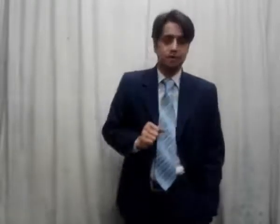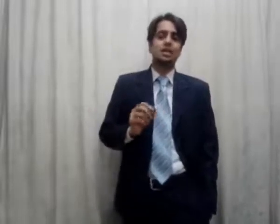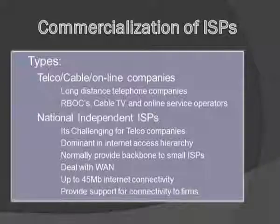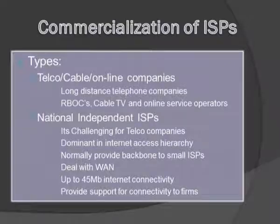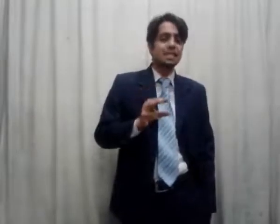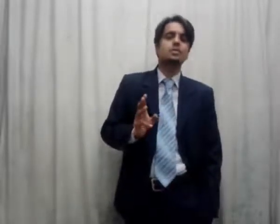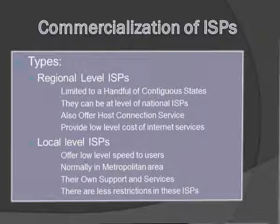The second type of ISP is the national independent ISP. It is challenging for telco, cable, and online organizations because national ISPs are providing backbone to small organizations or small ISPs within a country. These organizations support connectivity of up to 45 MB per second, and this can be used as a backbone for any local ISP. Normally, these ISPs provide support to complete organizations.